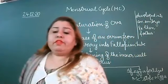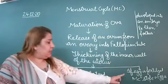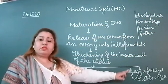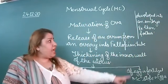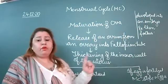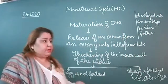So, if the egg is fertilized, the menstrual cycle stops and the egg develops into an embryo and then grows up.